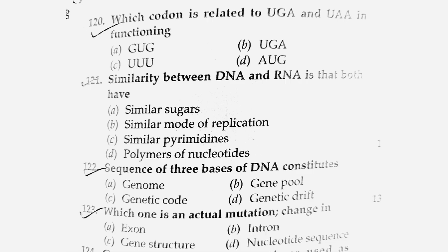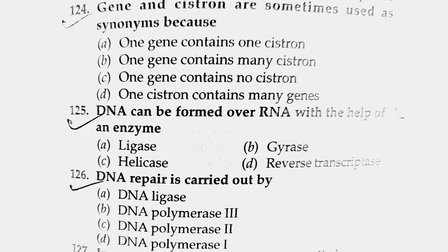Next question: Gene and cistron are sometimes used as synonyms. One gene contains one cistron. Option number A.